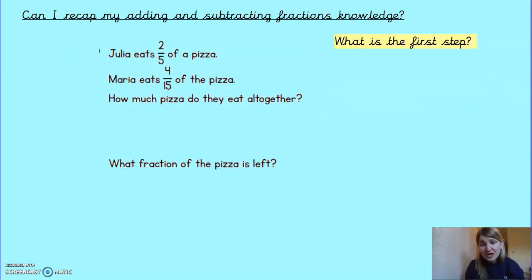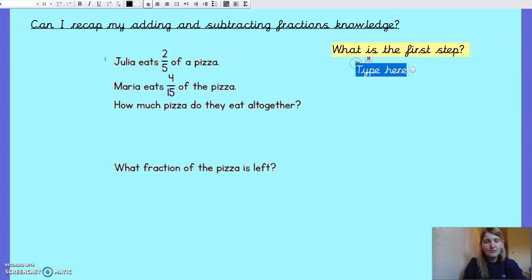Right. So word problem here, again, I'm going to pause. I'm going to read it to you, ask you to have a go, pause me, and then come back and we'll have a look together. So Julia eats 2 fifths of a pizza. Maria eats 4 fifteenths of a pizza. How much pizza do they eat all together? Keyword for you there. And then a second part of the question is what fraction of the pizza is left? Well, we've done the first step together. That's reading it. Can you now go through, underline, and choose how you might solve that? Again, really good. If you have a go, pause me here and then come back and I will do a worked example.